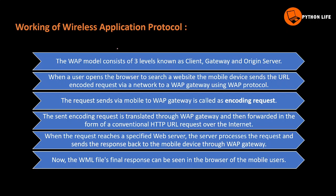The WAP model consists of three levels: the client, the gateway, and the origin server. When a user opens the browser to search a website, the mobile device sends a URL-encoded request via the network to the WAP gateway using the WAP protocol.